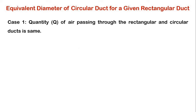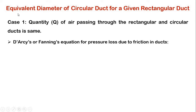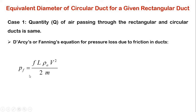Let us consider the first case to get the equation for equivalent diameter of circular duct for a given rectangular duct. We will use Darcy's equation, also called Fleming's equation, for pressure loss due to friction in ducts. This is the equation to calculate pressure loss due to friction in ducts.